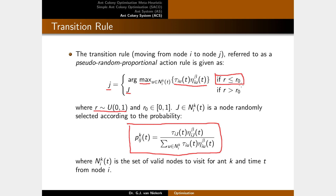This boils down to: take the best most-promising node, or take one chosen probabilistically like the ant system — all determined by whether r is smaller or greater than r0. If r0 is very large (close to 1), the top node is almost always selected — this is exploitation. If r0 is very small (close to 0), the probabilistic selection is used most of the time — this is exploration. By choosing r0 carefully, you can control the exploitation-exploration trade-off in a much more controlled way, and you can also vary r0 over time — starting small for exploration and increasing toward exploitation.